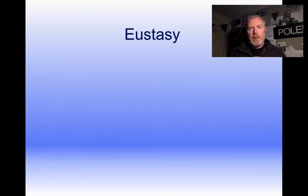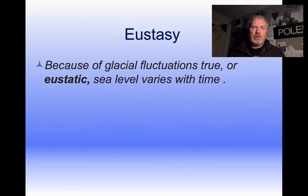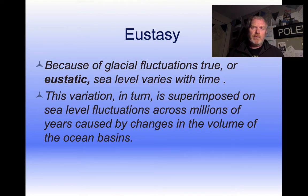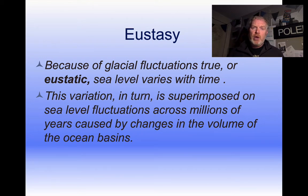There are two ways in which sea level can change as a result of continental ice sheets. The first is what we call eustasy, or eustatic sea level change — a change in true sea level, or the volume of water in ocean basins. The volume of ocean basins will change as a result of plate tectonic activity, but that's over a significantly longer time scale. For the Quaternary period, we're really just talking about water that's either in the ocean or in the continental ice sheets.